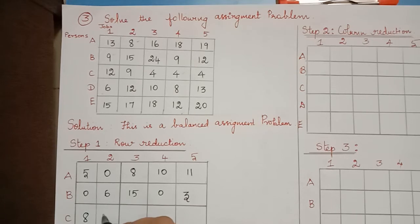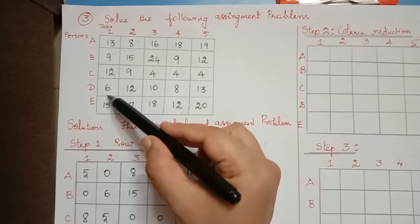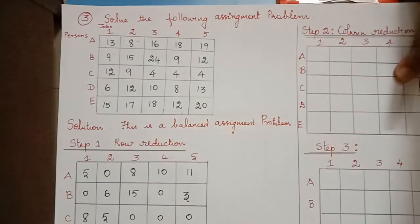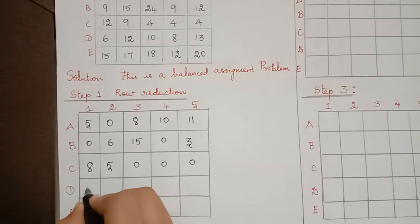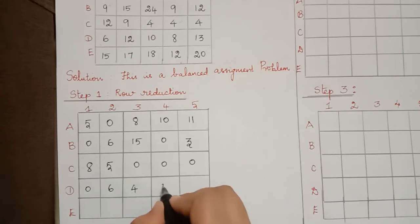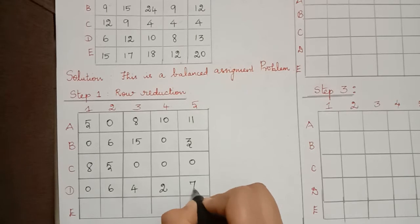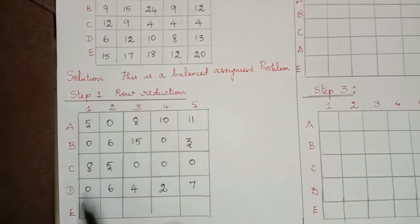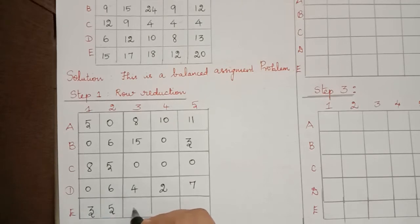9 minus 4 is 5, 4 minus 4 is 0, and there are also two 0s. The least element in the fourth row is 6, so 6 minus 6 is 0, 12 minus 6 is 6, 10 minus 6 is 4, 8 minus 6 is 2, and 13 minus 6 is 7. The least element of the fifth row is 12, so 15 minus 12 is 3, 17 minus 12 is 5, 18 minus 12 is 6, 12 minus 12 is 0, and 20 minus 12 is 8.